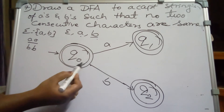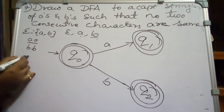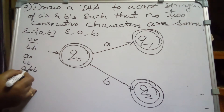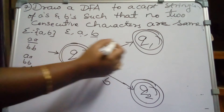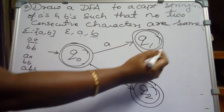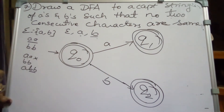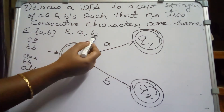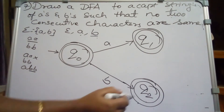For Q0 we have shown transitions on A and B. But if the input is something like AA, BB, or ABB, two consecutive symbols are together and the string must be rejected. If we loop Q1 on A, it would accept AA which violates our condition. Similarly, looping Q2 on B would accept BB.